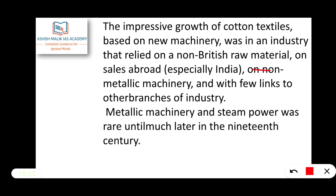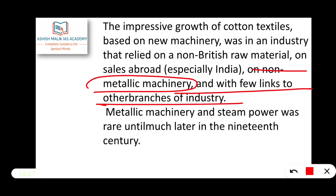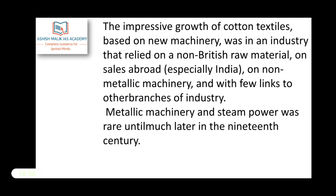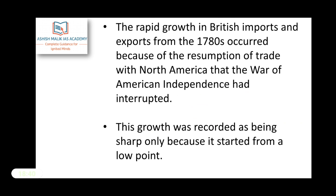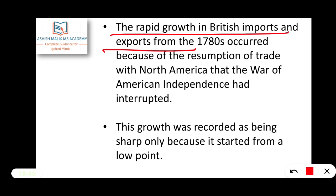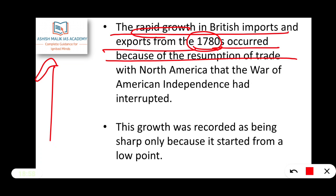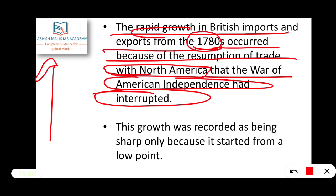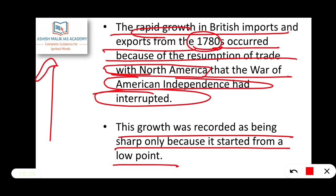Britain opted to use India as a source because of its cotton production. The cotton textile industry operated on non-metallic machinery with few links to other branches of industry. Metallic machinery and steam power were rare until much later in the 19th century. This growth also occurred because of the resumption of trade with North America, which the war of American independence had interrupted.